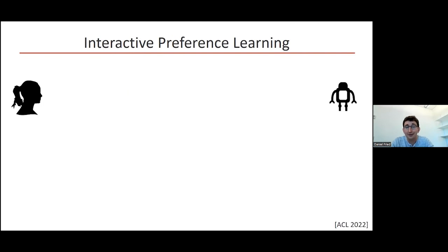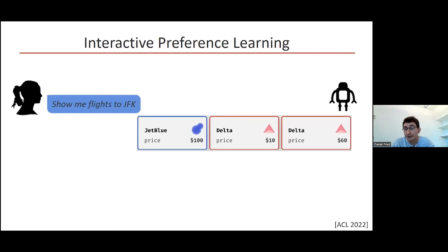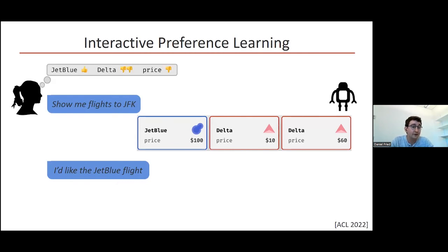These days I'm thinking a lot about interaction, where you have multi-turn going back and forth between a person and a system. For example, if a person's interacting with a flight booking system and says show me flights to JFK, the system can come back with some set of options and the person will pick one out. But they really have some underlying preferences that affect which flights they like. They're identifying one flight here, this JetBlue flight, but really we want to figure out what are their preferences that would affect what flights they'd like in other settings too. And more than just the option they choose, the way they refer to that option gives us information about that.